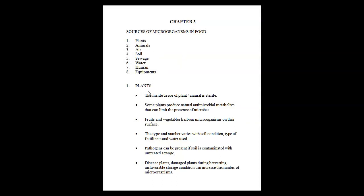The first source is plants. The tissues of plants or animals are actually sterile — that is, free of microorganisms. At the same time, some plants have the ability to produce natural antimicrobial substances that can limit the presence of microbes. Sometimes microorganisms enter food material, but the food itself can produce antimicrobial substances or metabolites that kill or inhibit the growth of those microorganisms.